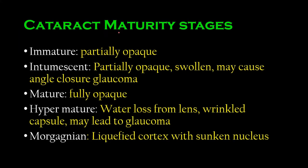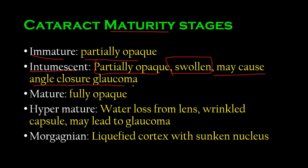The stages of cataracts by maturity: immature — partially opaque. Intumescent — partially opaque and swollen due to entry of water into the lens; it may cause angle-closure glaucoma. Briefly: the reason an intumescent cataract causes angle-closure glaucoma is that when it swells, it puts pressure on the iris, causing the iris to bulge forward, closing the angle and causing glaucoma.